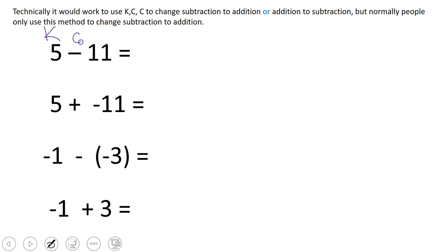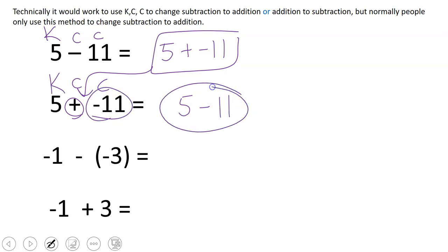So we can keep change change to change subtraction to addition. You could also go backwards and say, all right, well, I want to change this addition to subtraction. So you could keep the 5, change the addition to subtraction, and then change the negative 11 to a positive 11. And look, we ended up back where we had started.